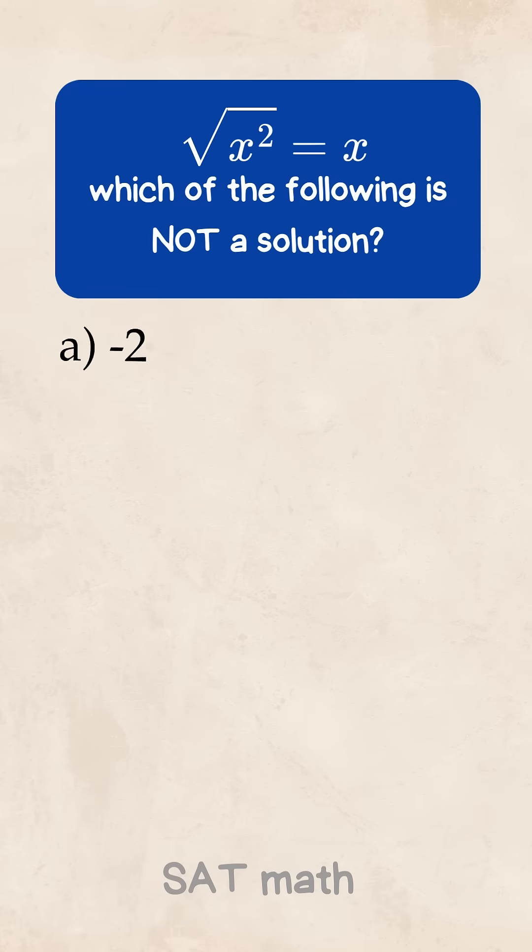Alright, here's a quick SAT math check, and it might trick you if you're not careful. The question is, if the square root of x squared equals x, which of the following is not a solution?